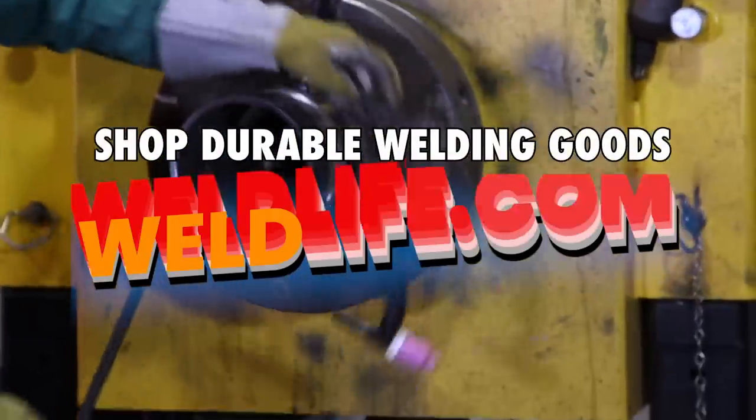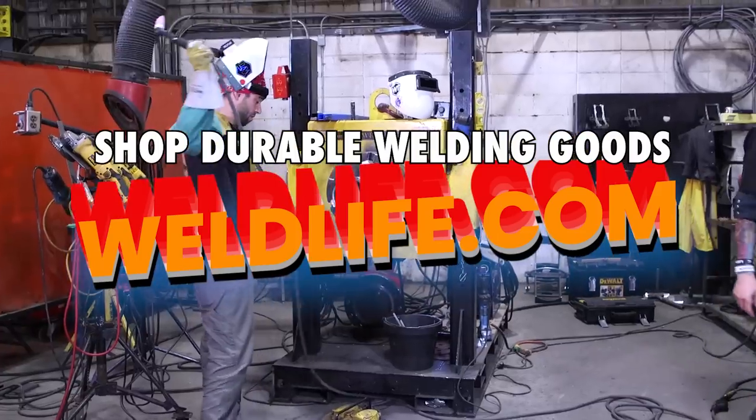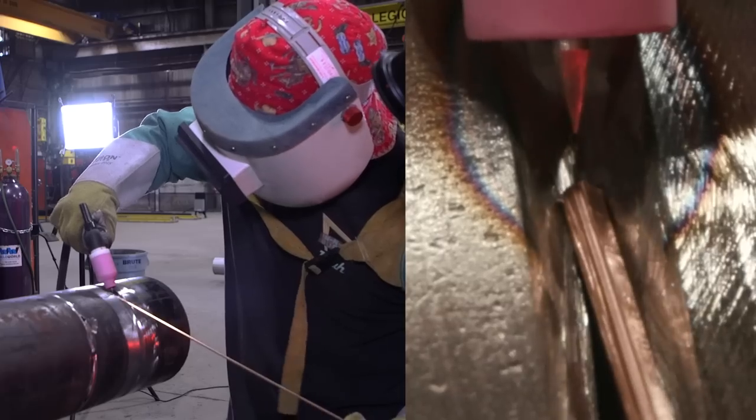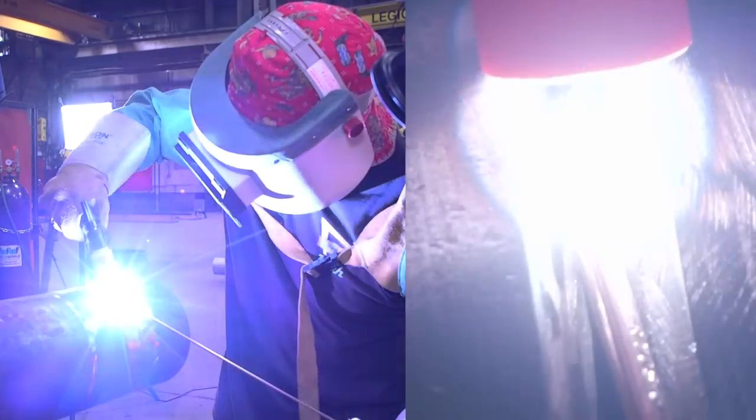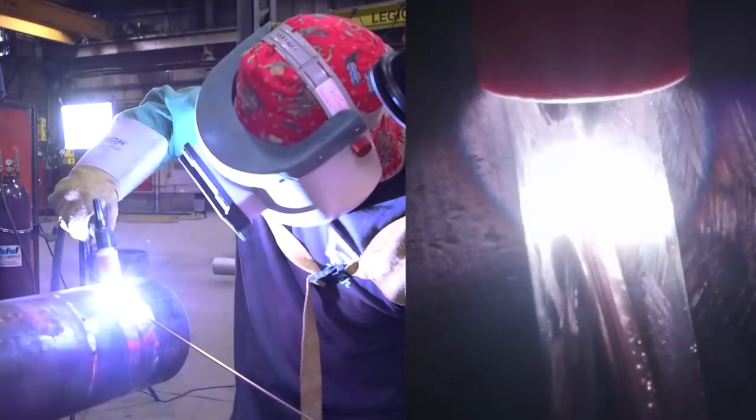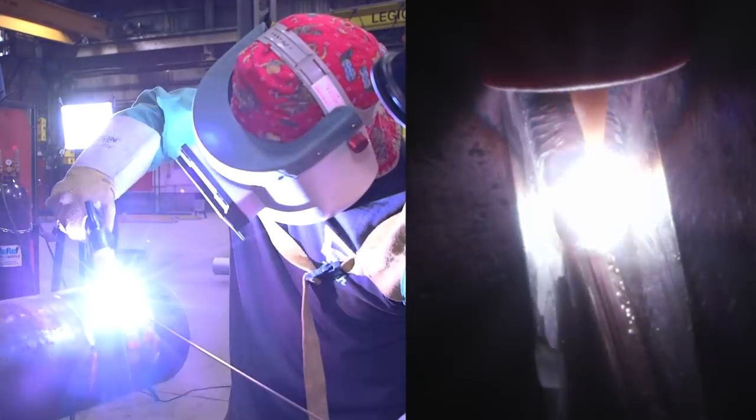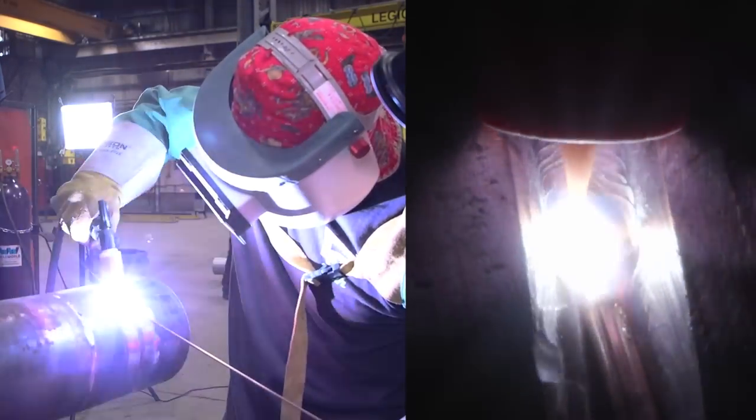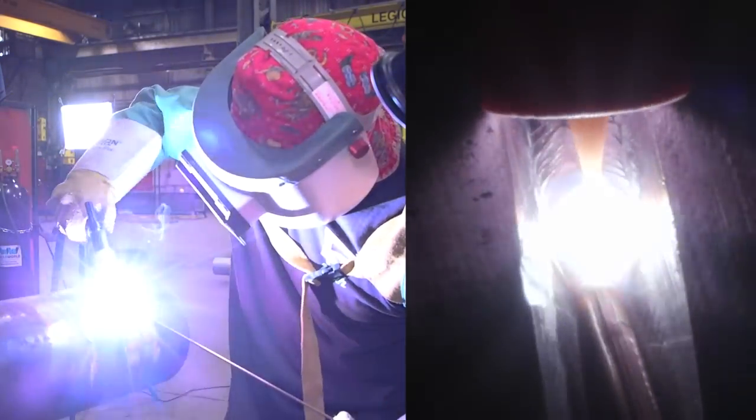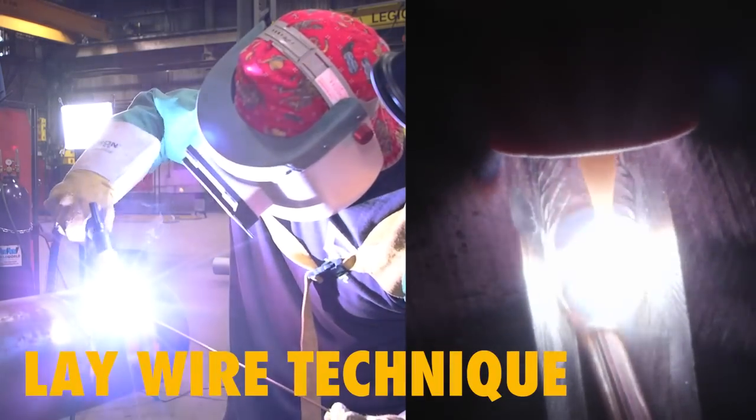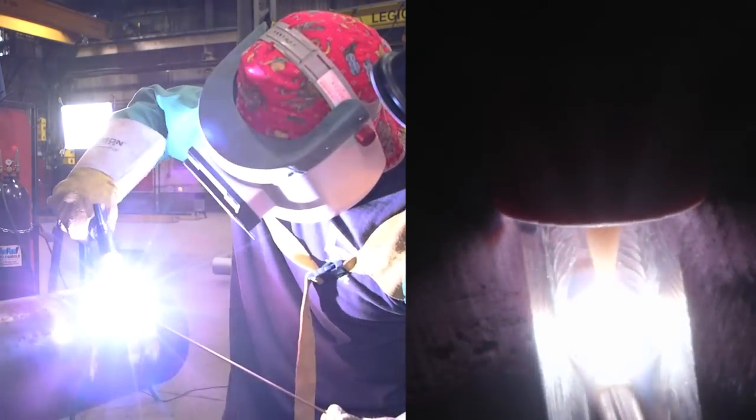Check out WeldLive.com and shop all welding gear shown in this video. So we have Jay-Z here. He's doing the root pass and he's walking the cup in there. There's different ways you can hold the TIG torch. You can hold it in the style he is, or you can hold it like it's just sitting in your palm. So he's using the lay-wire technique.